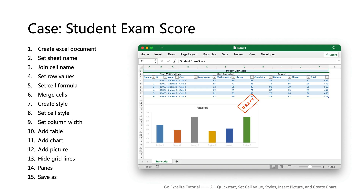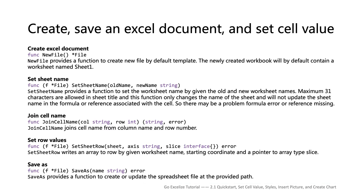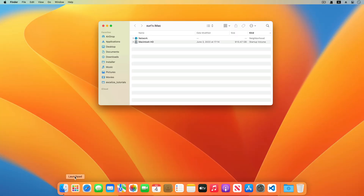I made an example about student exam scores. I will show you how to generate a report spreadsheet with Excelize using this example. Let's take a look at the goal of this section — there are some cells with data formulas, merged cells, and others in the student exam score workbook. To prepare the workbook for this example we need to use five functions provided by Excelize: new file, new sheet, set sheet name, coordinates to cell name, set rows, and save as.